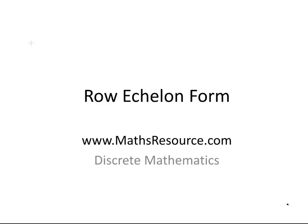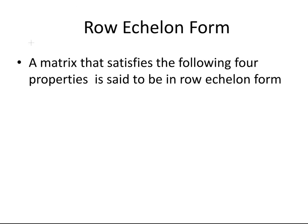In this presentation, we're going to look at row echelon form. This is a form of a matrix, and if a matrix has the following conditions, you could say that it is in row echelon form. A matrix that satisfies the following four properties is said to be in row echelon form.